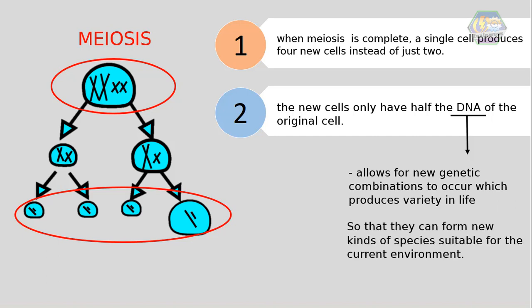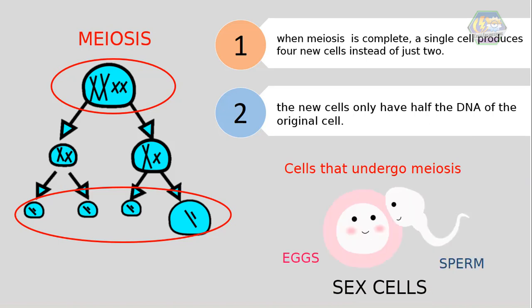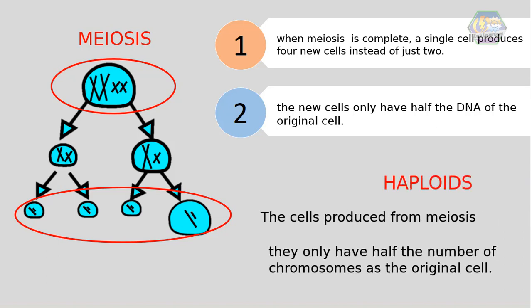New genetic combinations allow organisms to form new kinds of species suitable for the current environment. Examples of cells that undergo meiosis include sex cells or gametes — that includes the sperm and the egg cells. The cells produced from meiosis are called haploids because they only have half the number of chromosomes as the original cell.